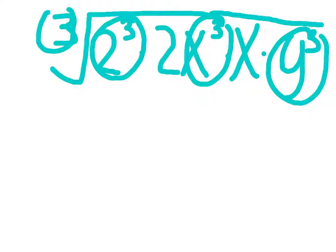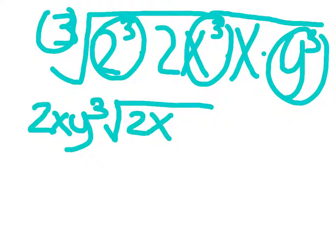That becomes 2xy times the cubic root of 2x because that's the remaining. Now let's look at this problem right here, the square root of 24x to the 5th power.